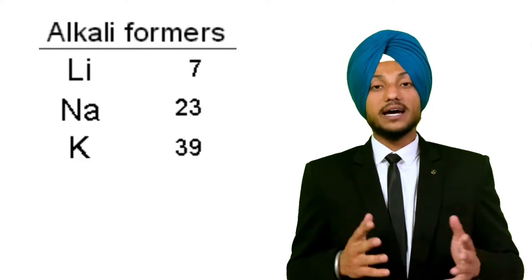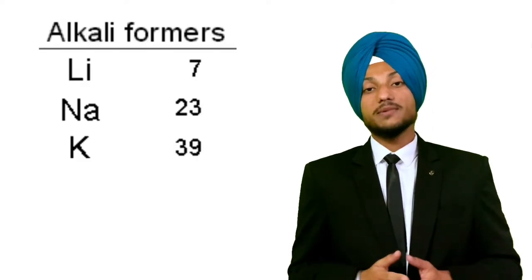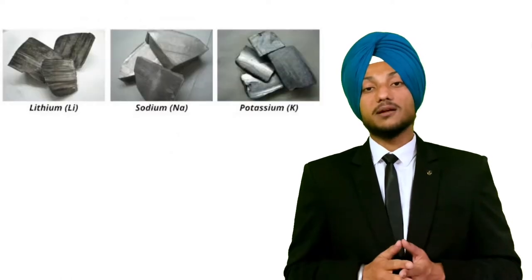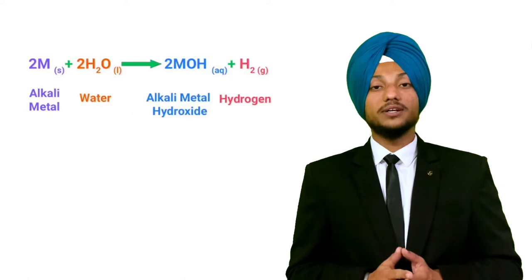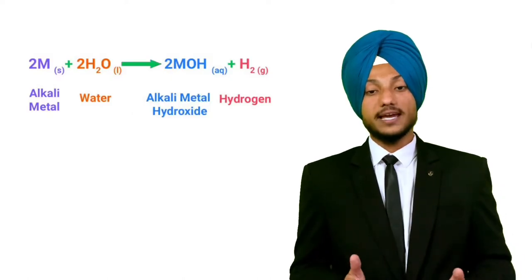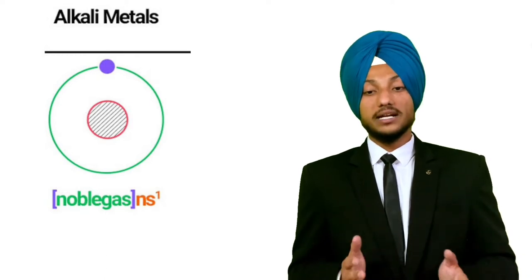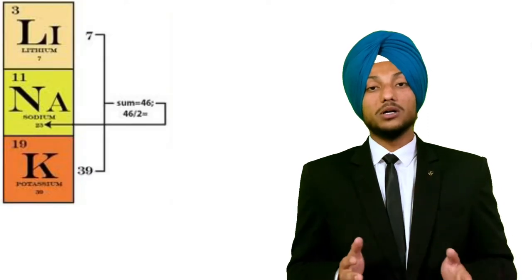In the example of the alkali metal group, the elements lithium, sodium, and potassium have similar chemical properties and form a triad. For example, all of these are metals, all of them react with water to form alkalis and hydrogen gas, and all of them have a valency of one — they are monovalent elements.